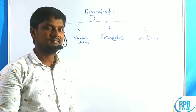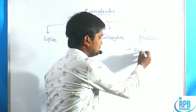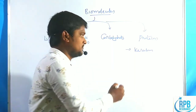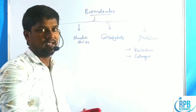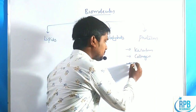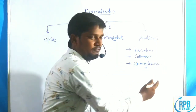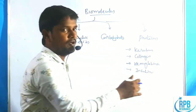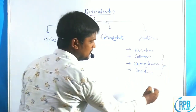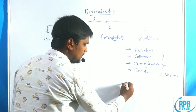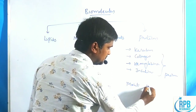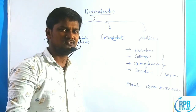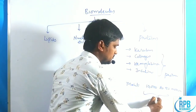Now in this session we will discuss proteins. Proteins include keratins — found in hair and fingernails — as well as collagen, which is mainly found in bones and tissues, and hemoglobin, which transfers oxygen from lungs to tissues, and insulin. All these compounds are proteins. Proteins are higher molecular weight compounds, with molecular weight ranging from 10,000 to 15 million. That's why they are called polymers.